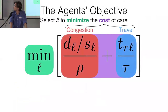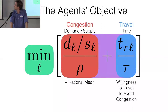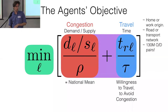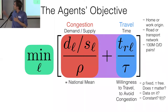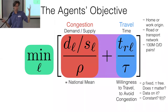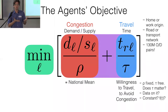We encapsulate this in an agent-based simulation where agents select the location that minimizes cost of care, considering all locations within 100 kilometers. Cost is the sum of a congestion cost — demand over supply normalized by the national rate of physicians per capita — and a travel cost: the travel time from home or work origin to the physician's office on a road or transportation network. That travel time is normalized by a parameter tau to convert it into a cost.